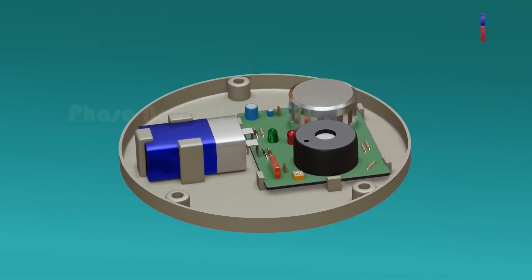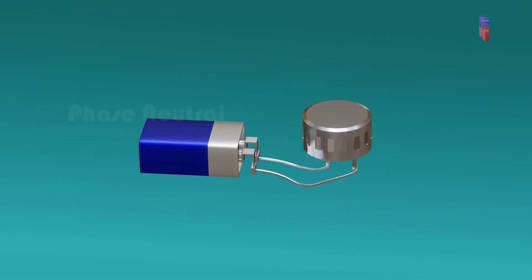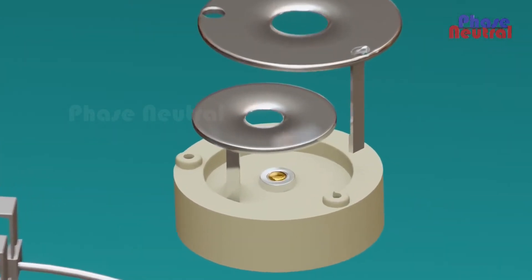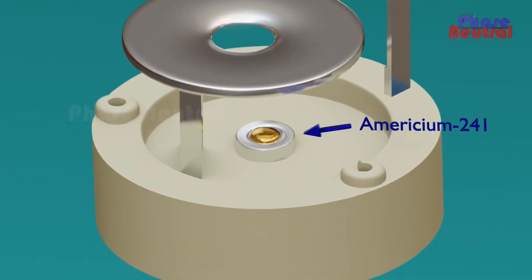Inside of an ionization chamber are two plates that are connected with the battery's positive and negative terminals, and the radioactive material americium-241 to ionize air in the ionization chamber.